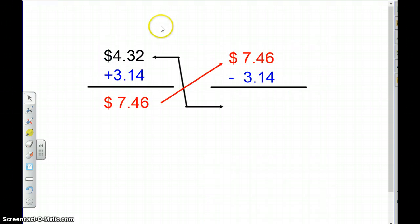So let's go ahead and try another problem. I have $4.32, I'm going to add $3.14. So we always start on the right and move left. So we're starting in the pennies. 2 plus 4 is 6, 3 plus 1 is 4. Bring down that decimal. 4 plus 3 is 7.